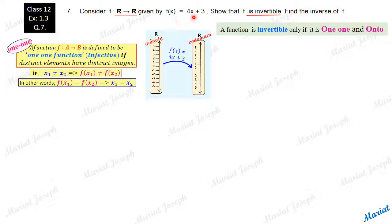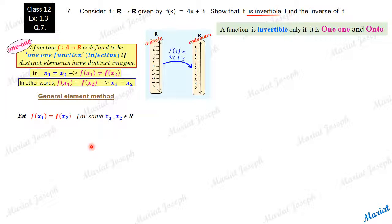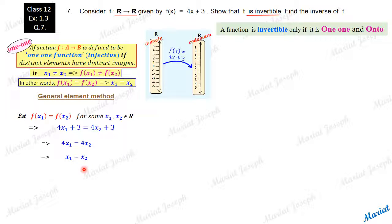Let's check whether this given function is one-one. I will go by the second interpretation. Let f(x1) = f(x2) for some x1 and x2 in the domain. This means 4x1 + 3 = 4x2 + 3. Simplifying, 4x1 = 4x2, which gives x1 = x2. So the two images being equal implies the two pre-images are also equal, fitting the definition of one-oneness. Hence, this function is a one-one function.